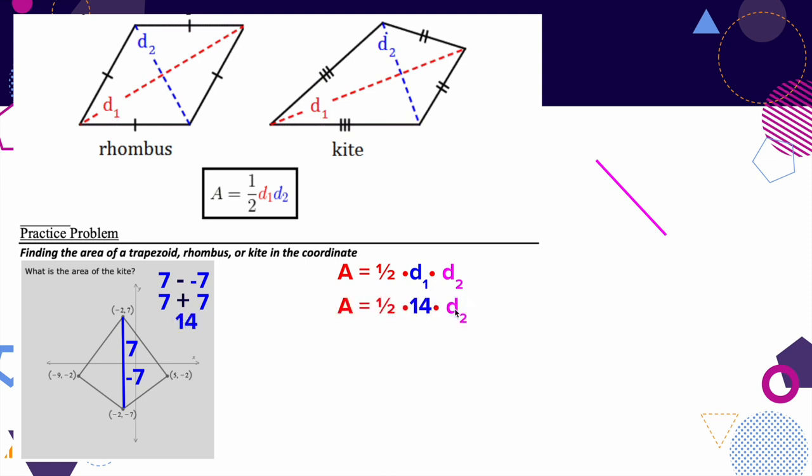Now I need diagonal two, so I'm going across here. I have negative nine to the left and positive five to the right. I'm looking at the x-coordinates now because the y-coordinates are the same. So I have five minus negative nine, which gives me positive 14.